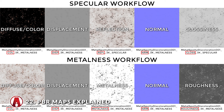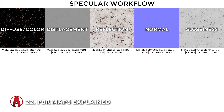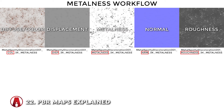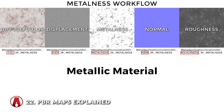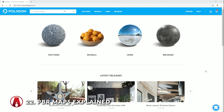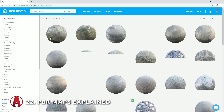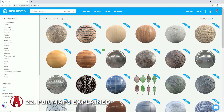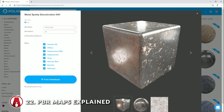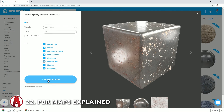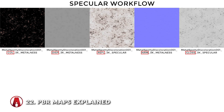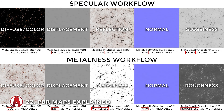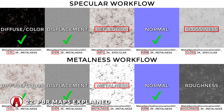I will cover 2 different workflows for creating metallic materials. The first one is the specular or standard workflow using the generic material, and the second one is the metalness workflow using the new metallic material in V-Ray Next. I'm going to go to Poliigon.com and download a free metal material. You can see the 2 workflows: specular and metalness. I will download both sets of maps at 3K resolution. With a quick look at the maps, the metalness workflow doesn't include the reflection and glossiness maps — instead it includes the metalness and roughness maps.